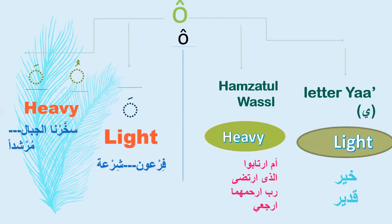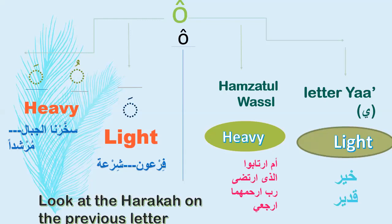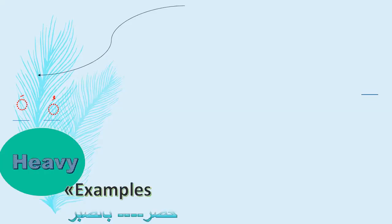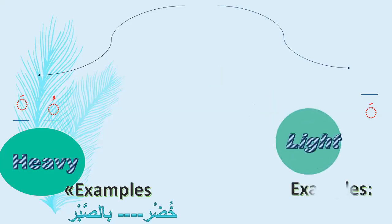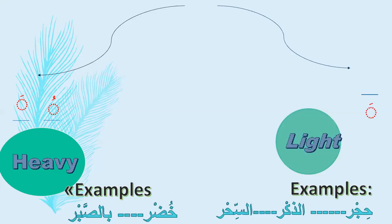If Ra has Sukun and is preceded by another letter that also has Sukun, look at the Harakah on the letter before that. If the previous letter has Dhamma, Ra is heavy — like 'Khudr', where Ra is heavy. If the previous letter has Kasra, Ra is light — like 'Hijr', 'Adh-dhikr', 'As-sihr', where Ra is light.